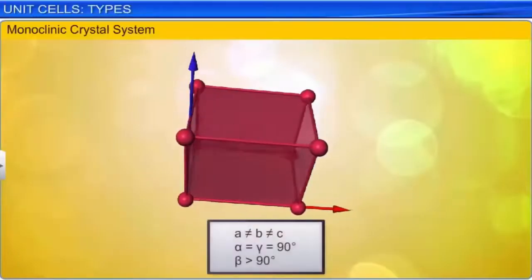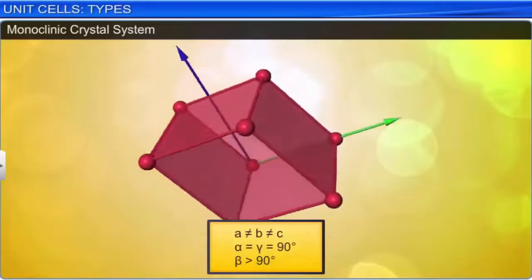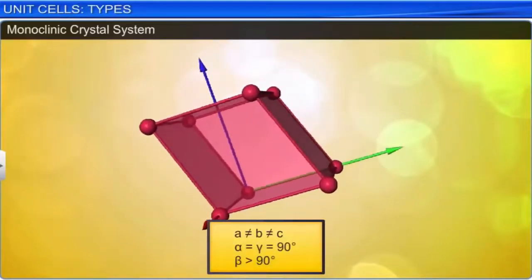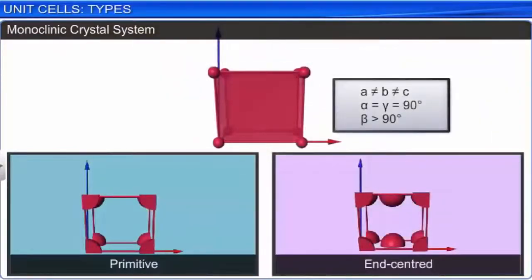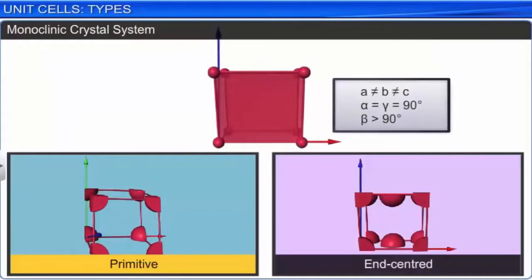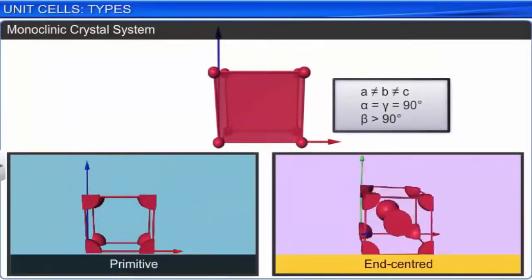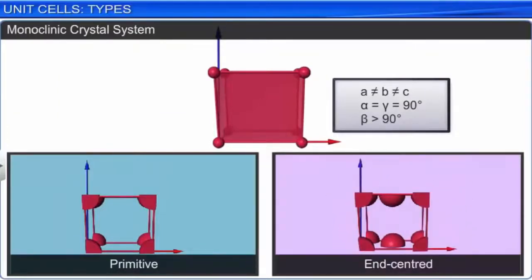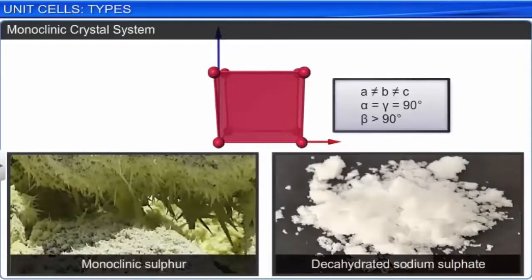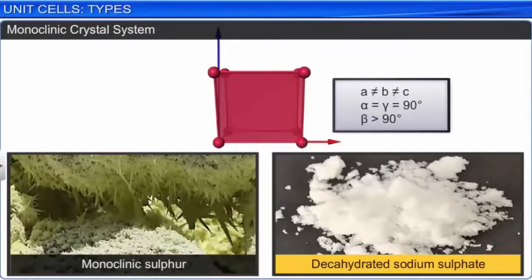In a monoclinic crystal system, the three axes are of unequal length and only two angles are of 90 degrees. The possible lattices are primitive and end-centered. For example, monoclinic sulfur and decahydrated sodium sulfate.